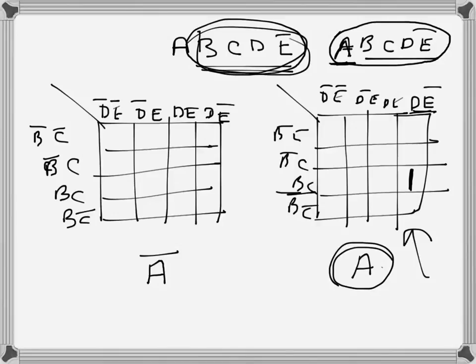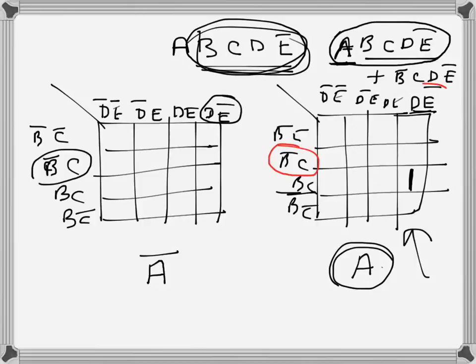Now let's say we have another term in the sum-of-products: b̄cdē. Notice there is no 'a' in this term. Since 'a' is absent, the 1 will go in both Kmaps — both the ā Kmap and the a Kmap — at the position corresponding to b̄c, dē.